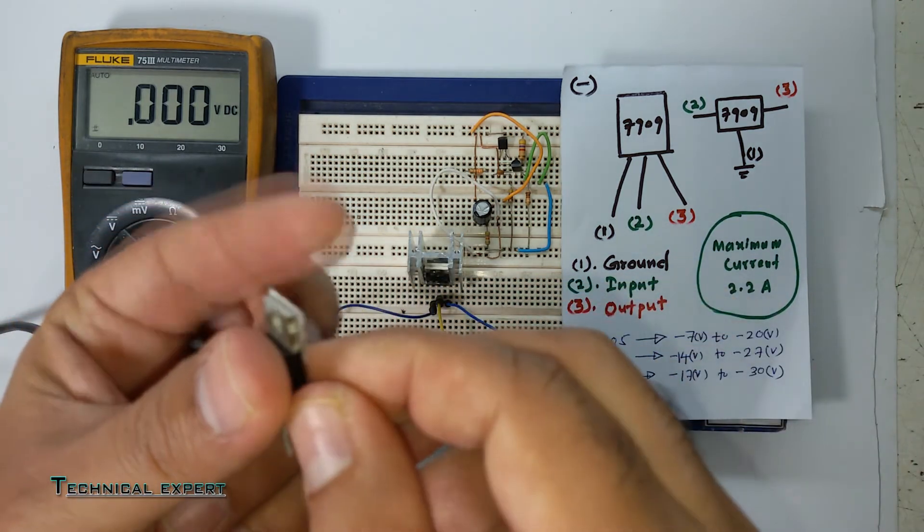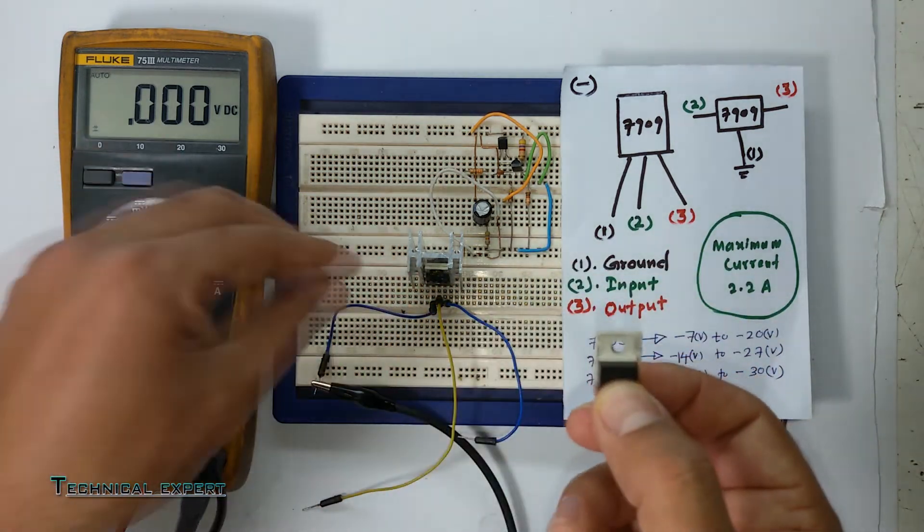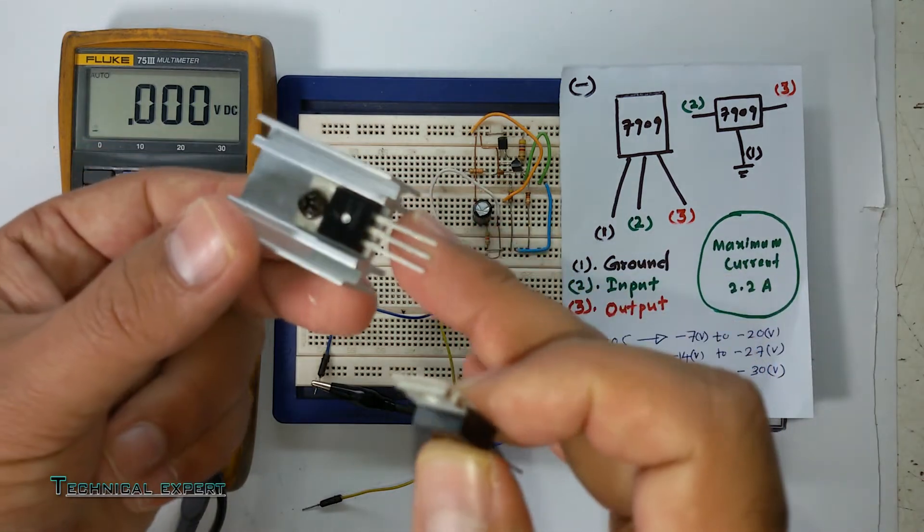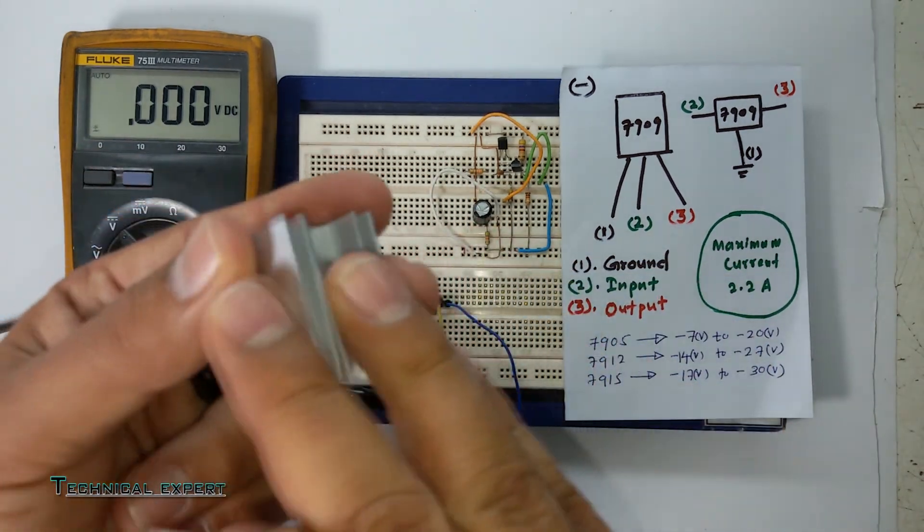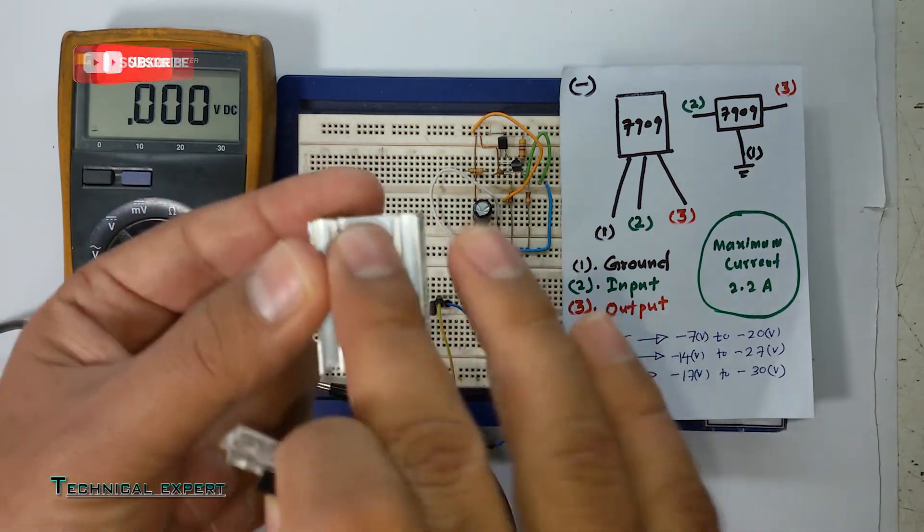The heat sink is to absorb all heat from the regulator. That's why we put on the heat sink.